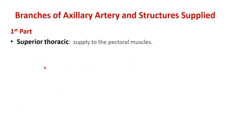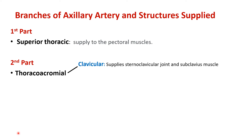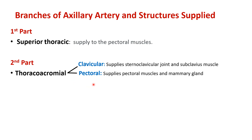The superior thoracic artery from the first part supplies the pectoral muscles — pectoralis minor and pectoralis major. The thoracoacromial artery from the second part divides into four branches. The clavicular branch supplies the sternoclavicular joint and the subclavius muscle. The pectoral branch supplies the pectoral muscles and the mammary gland.